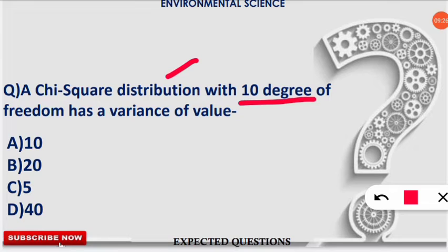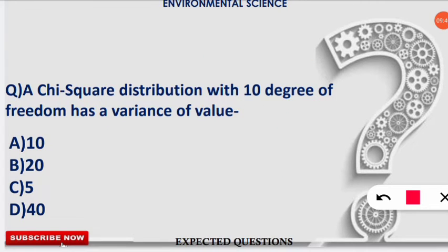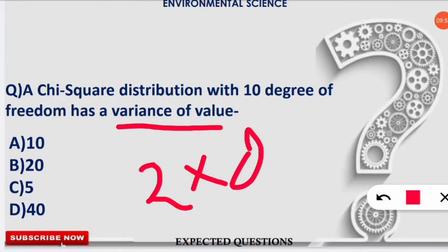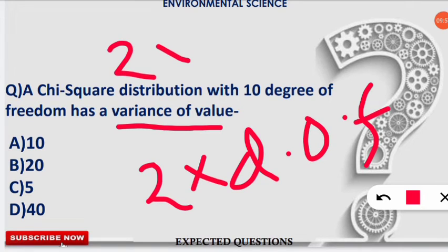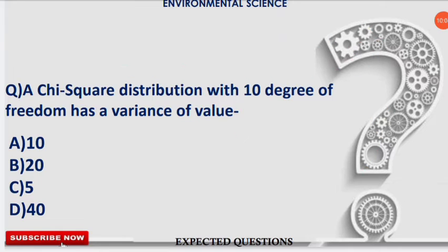The next question: a chi-square distribution with 10 degrees of freedom has what variance? To find the variance of a chi-square distribution, simply multiply the degrees of freedom by 2. So 2 × 10 = 20, which is the variance. Option B is correct.